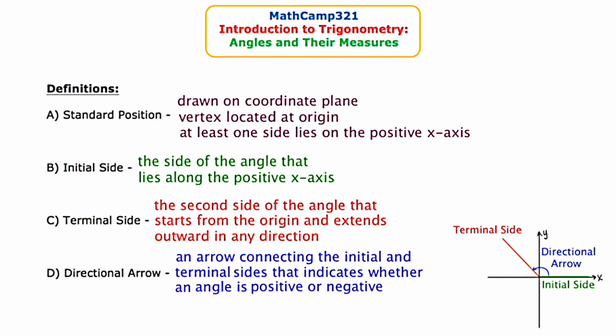The second term is initial side. The initial side of an angle is the side that lies on the positive x-axis — I've denoted that using the color green. The terminal side is the second side of the angle that starts from the origin and extends outward in any direction — I've denoted this in red. Keep in mind the terminal side can be rotated in any direction, while the initial side, the green side, is always fixed along the positive x-axis.